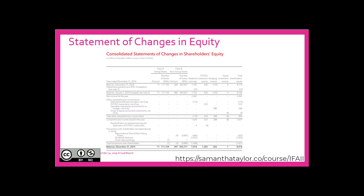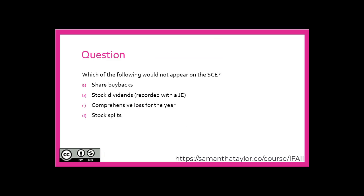Now a question. Which of the following would not appear on the SCE? Is it A, share buybacks? B, stock dividends recorded with a journal entry? C, comprehensive loss for the year? Or D, stock splits?